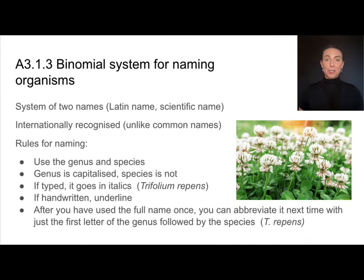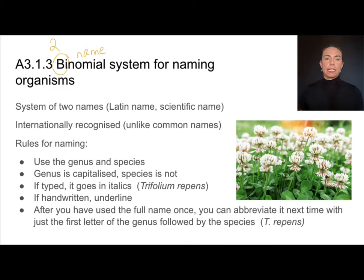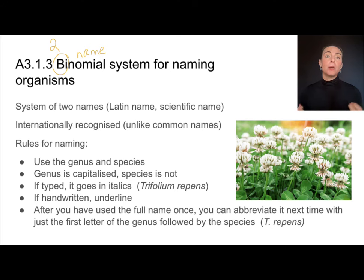Each species has a unique binomial name — 'bi' meaning two, 'nomen' meaning name. So each species has a Latin or scientific name made from binomial nomenclature. All those terms mean the same thing. We use them because they are internationally recognized. For example, I might call this plant a white clover and you might call it something entirely different, which makes communication difficult — especially across languages. Binomial nomenclature is a great way to promote international mindedness.